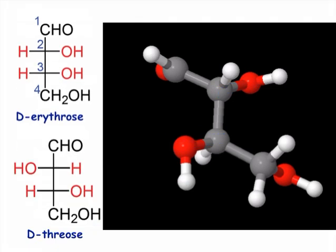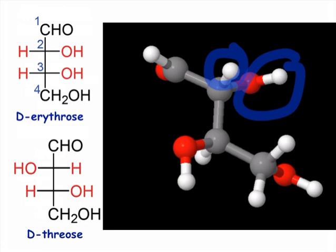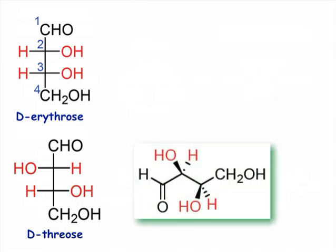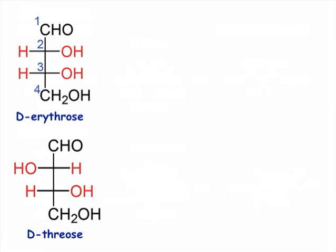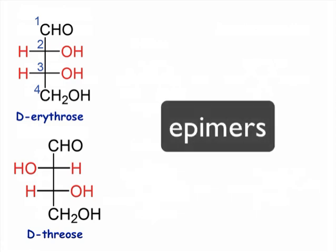Erythrose and threose differ only in the configuration of the stereocenter alpha to the carbonyl group. Thus, to generate the zigzag conformation of threose, we need only to exchange the hydrogen and hydroxyl groups on the alpha position of erythrose. We call molecules that differ only in the configuration of a single stereocenter, epimers.